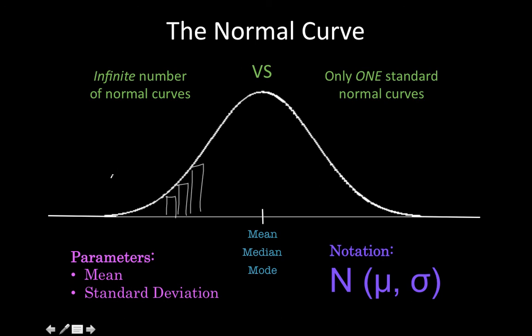They help us approximate distributions of many different measurements. They also help describe the results of various sampling procedures. So basically, they help us find the proportion of data values that fall within a range.